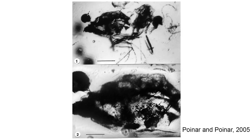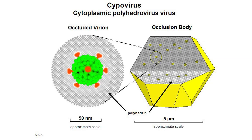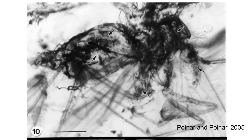The question I want to ask is, has anyone found a fossil virus? Yes, they have. A study from 2005 by George and Roberta Banar, published in the Journal of Invertebrate Pathology, found evidence of fossil viruses. They found a fossil midge preserved in amber that exhibited an infection of the Cyptovirus. This evidence of a fossil virus comes from the 99 million year old Burmese amber from the Cretaceous of Asia.